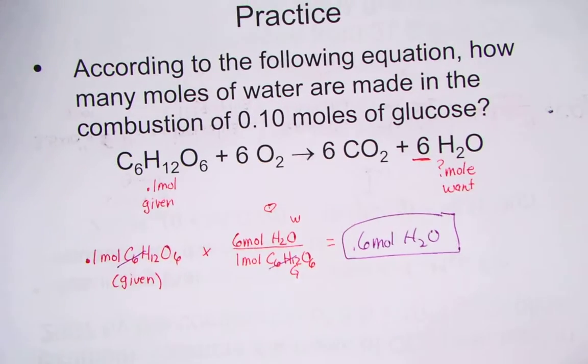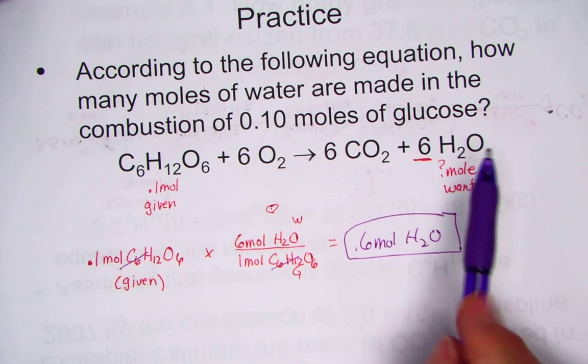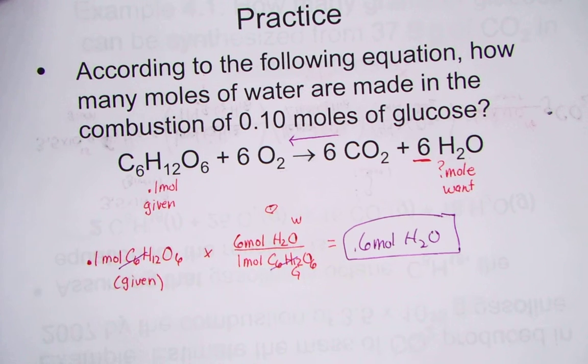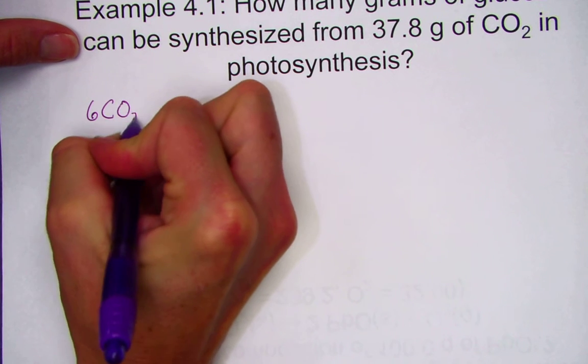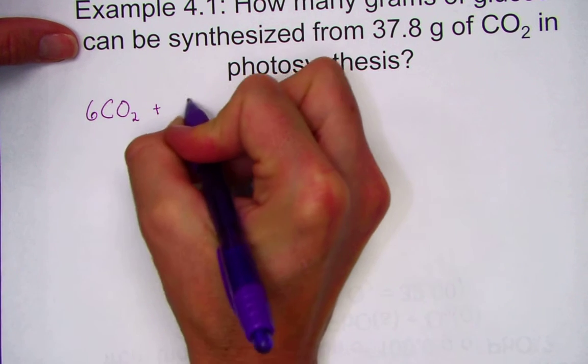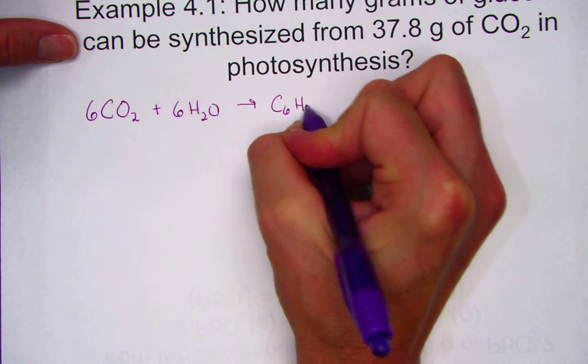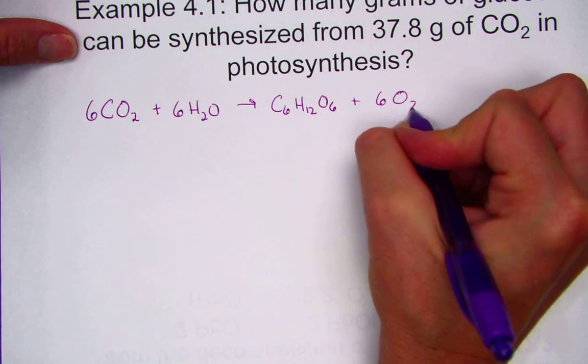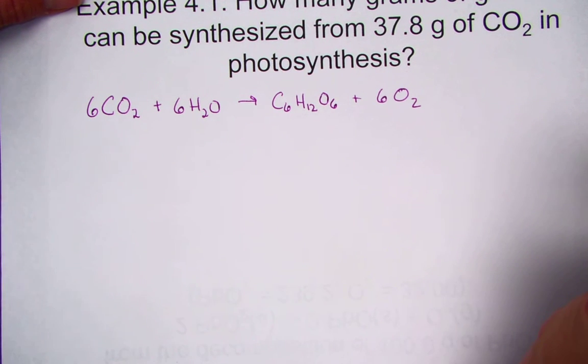How many grams of glucose can be synthesized from 37.8 grams of carbon dioxide in photosynthesis? Referring back to the previous slide, the front direction we called respiration. If I read the same equation but in reverse, we get what's called photosynthesis. So let's rewrite our balanced equation in the opposite direction. Six moles of carbon dioxide react with six moles of water to form one glucose molecule and six moles of oxygen. The process of photosynthesis is the reverse of respiration.